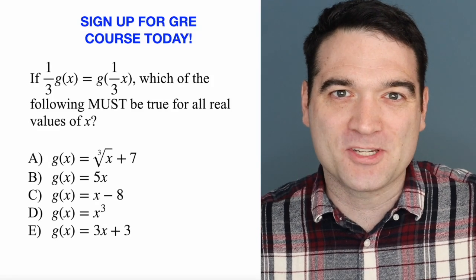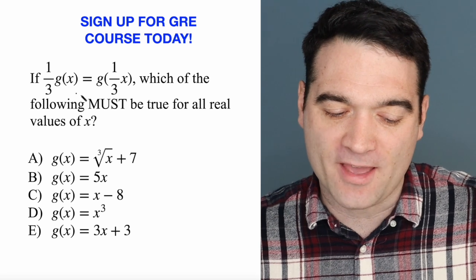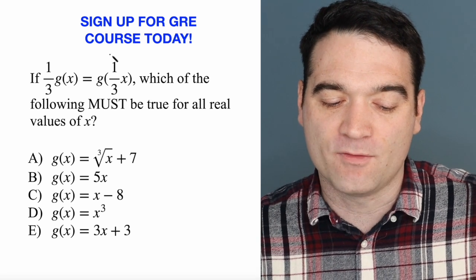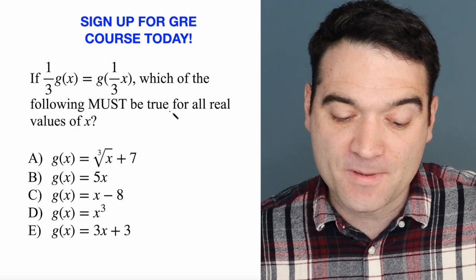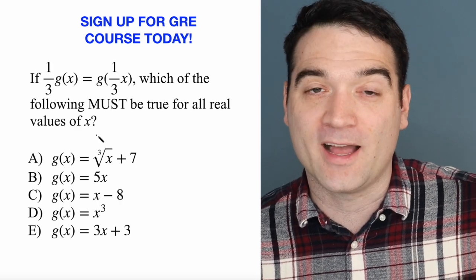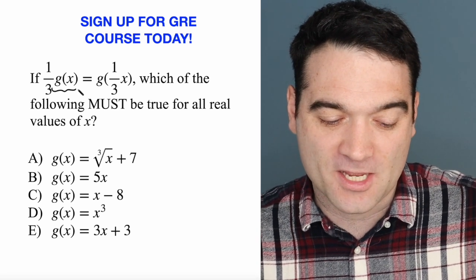Here's a GRE algebra question. Let's take a look. If one-third times g of x is equal to g of one-third times x, which of the following must be true for all real values of x? Okay, so we're dealing with functions here, right? Function notation.